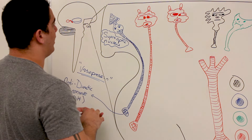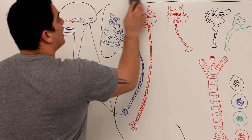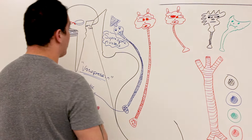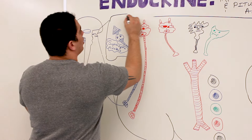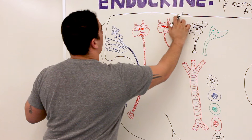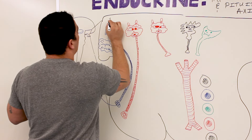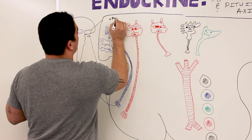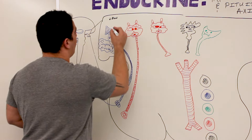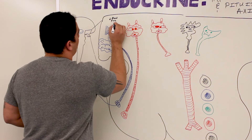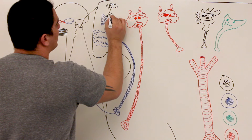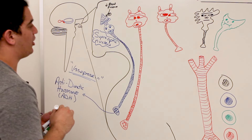What triggers the supreoptic nucleus to produce action potentials and release ADH? One big trigger is low blood volume. Low blood volume correlates directly with low blood pressure, because volume is a direct indicator of pressure. So low blood pressure is a very strong stimulus for the supreoptic nucleus.